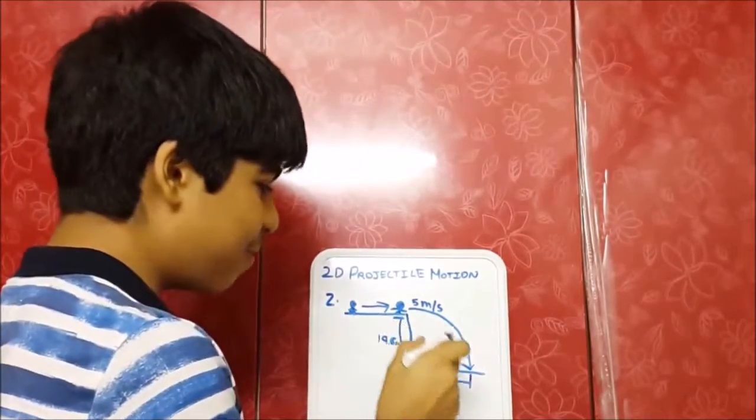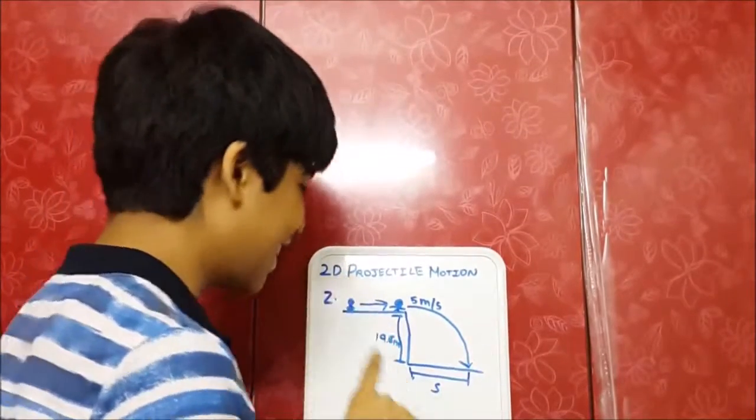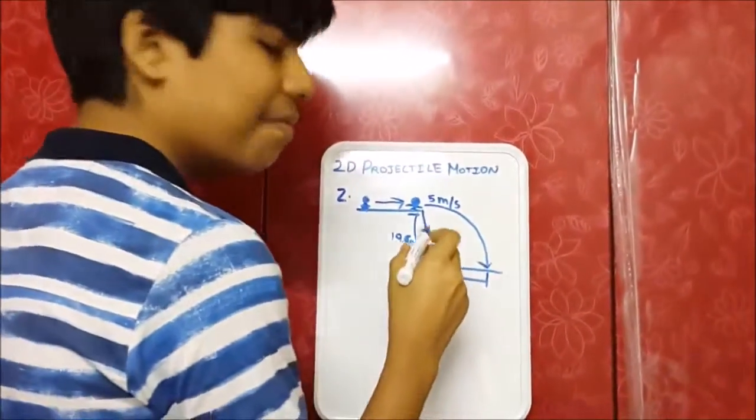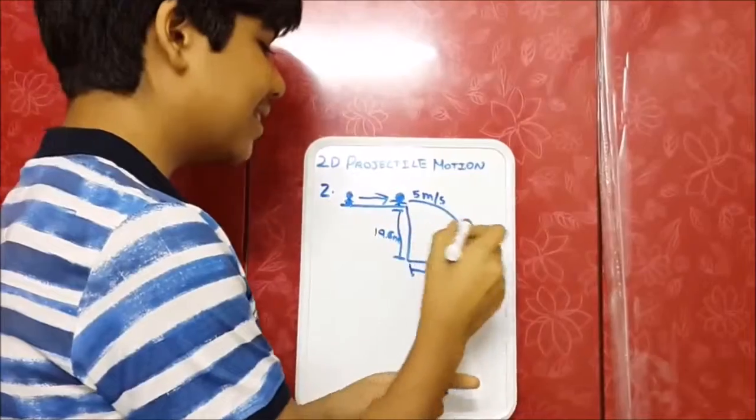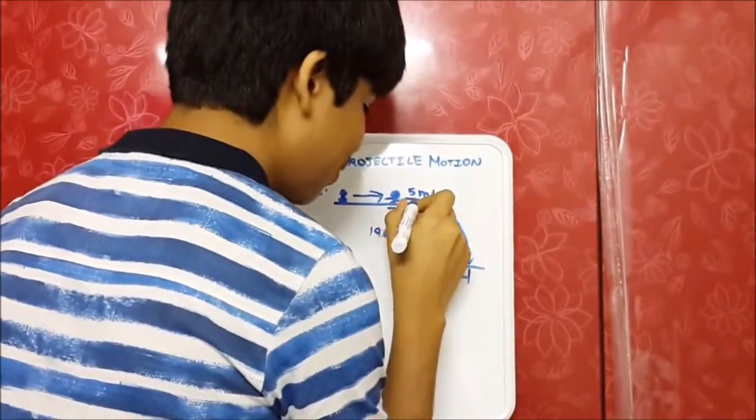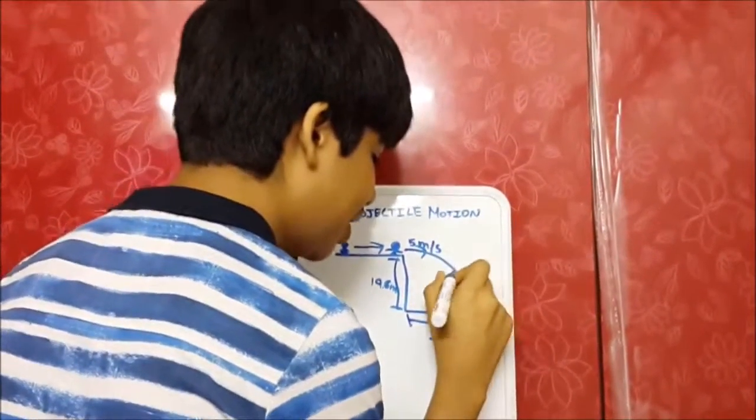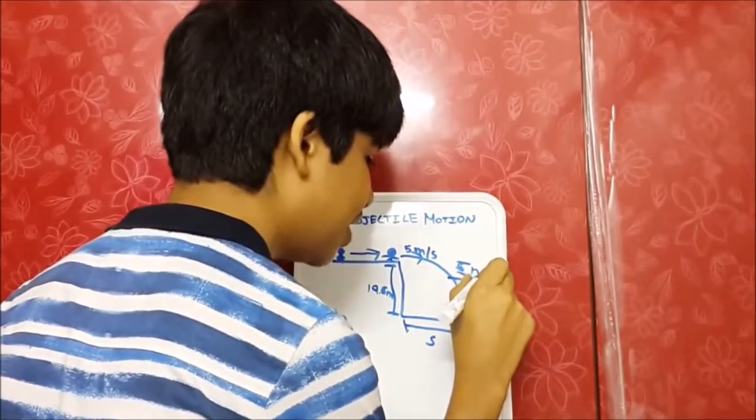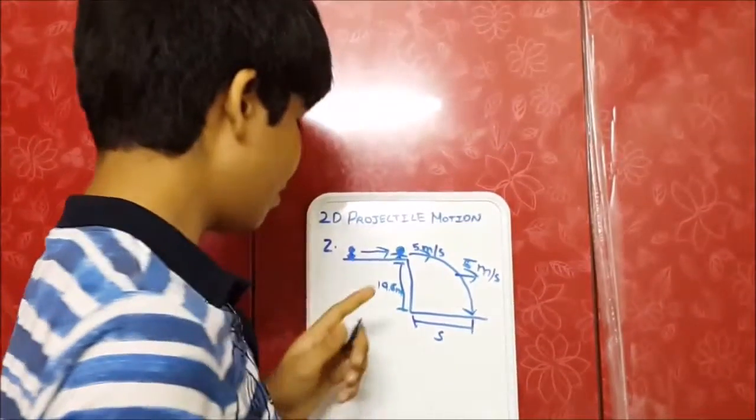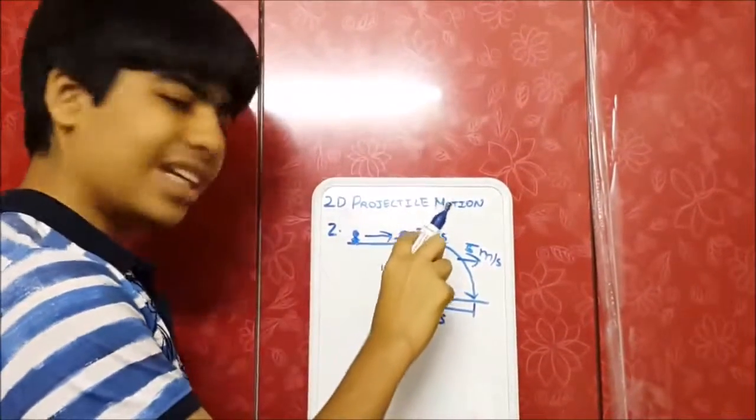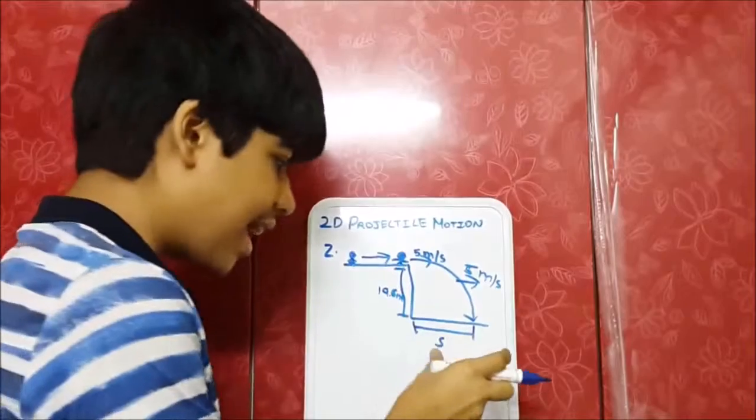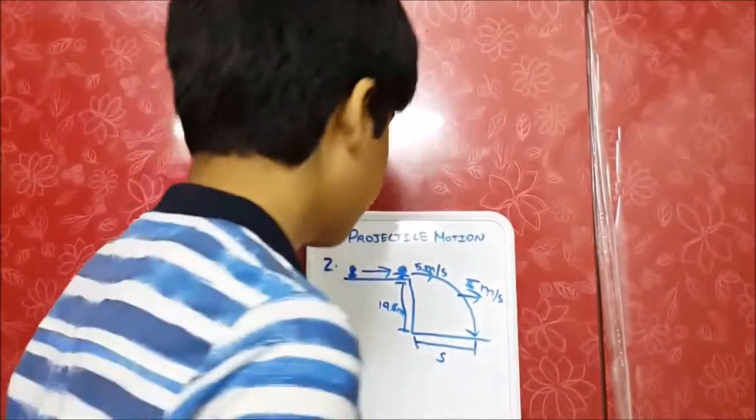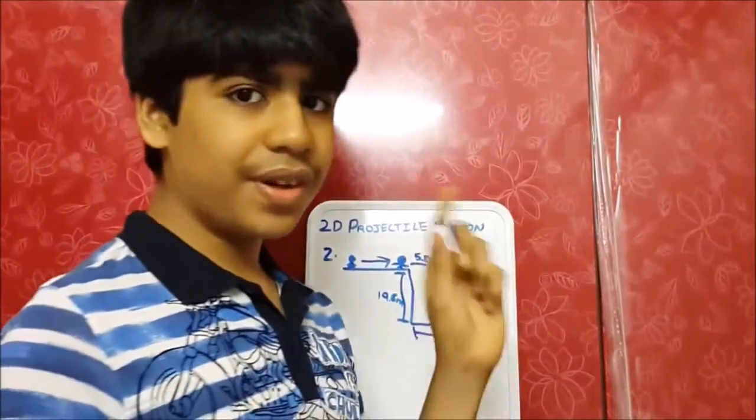And jump off a cliff and land on the ground again with a constant horizontal velocity of 5 meters per second. That means its velocity here, everywhere, it's 5 meters in the horizontal direction. And the height of the cliff is 19.6 meters. And this distance, which is what we need to find, is s.